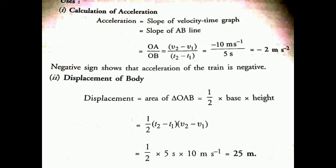The negative sign shows that the acceleration of the train is negative. The next use is calculating displacement using the velocity-time graph. Displacement = area of triangle OAB = ½ × base × height = ½ × (t2 − t1) × (v2 − v1) = ½ × 5 × 10 = 25 meters. So the displacement is equal to 25 meters.